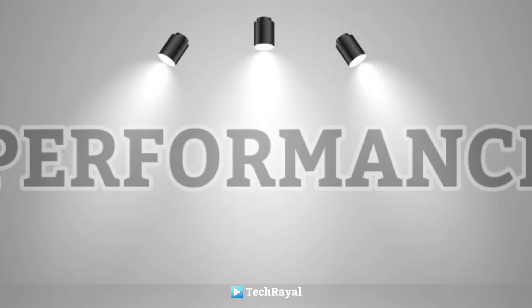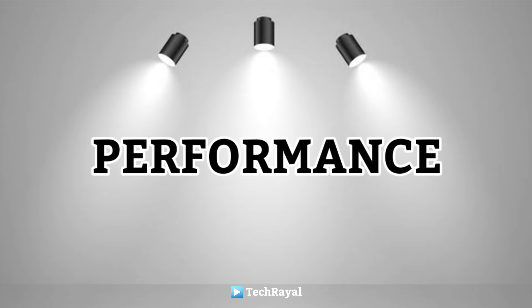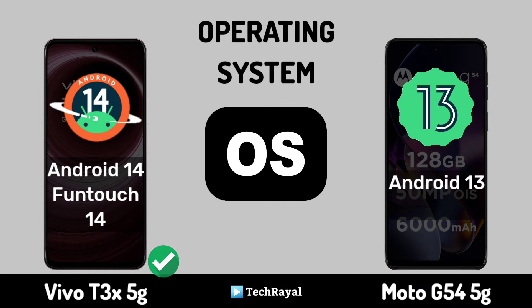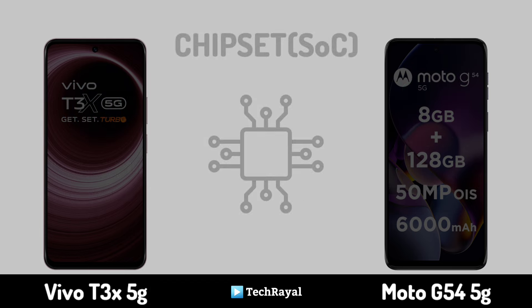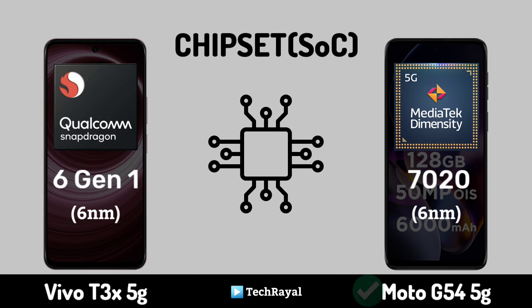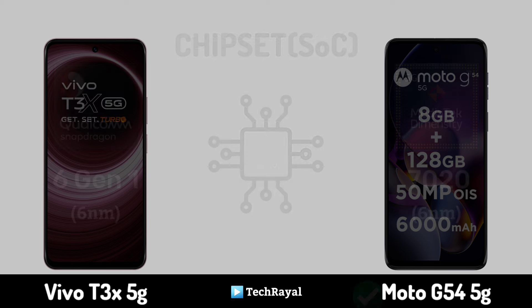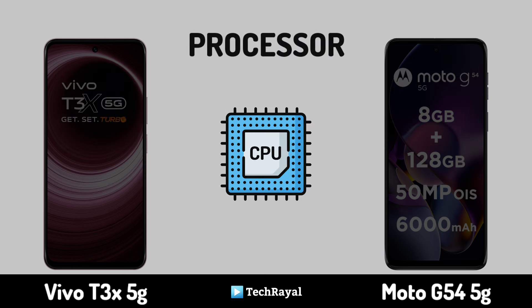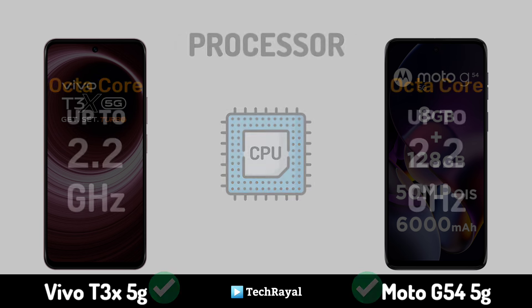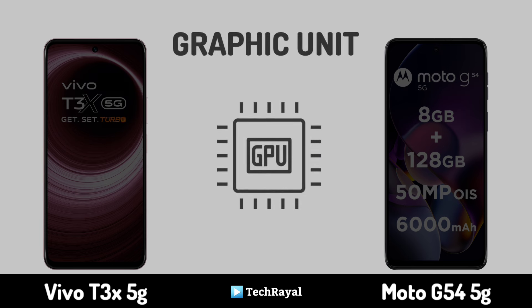Core performance: operating system. Chipset. Processor. Graphic unit.